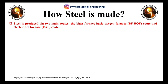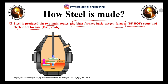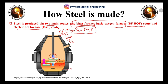Steel is produced via two main routes. The first is the blast furnace–basic oxygen furnace route (BF-BOF). In this route, pig iron from the blast furnace plus scrap and oxygen are charged into the basic oxygen furnace. The oxygen oxidizes impurities like silicon, carbon, manganese, and phosphorus, forming slag, and pure steel is obtained.